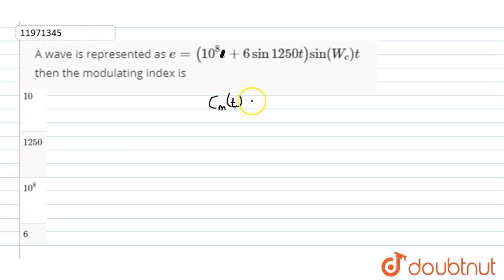It is CMt. Modulated wave to CMt as a function of t. This is CMt. So, we have a modulating wave.